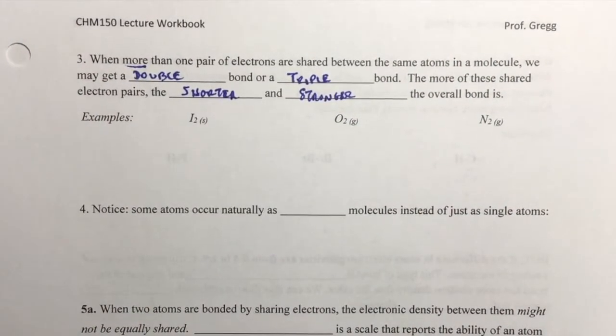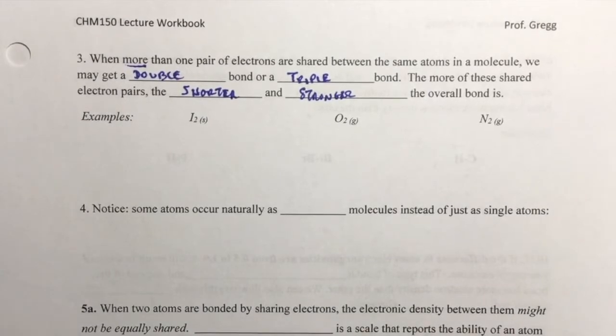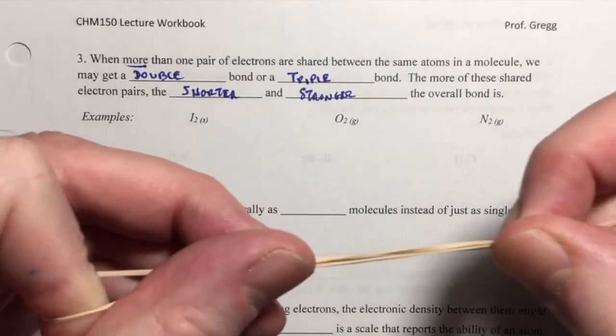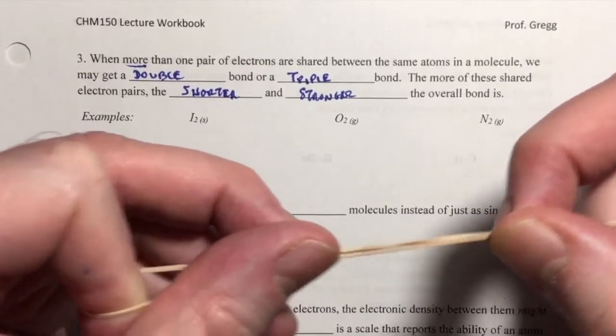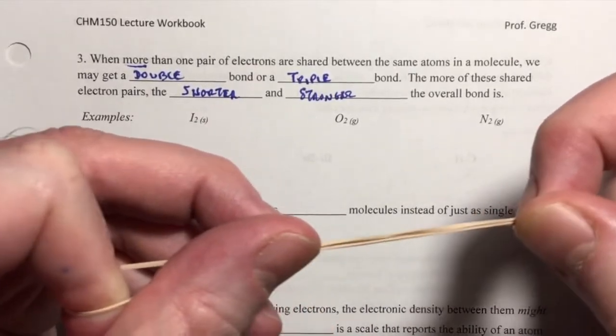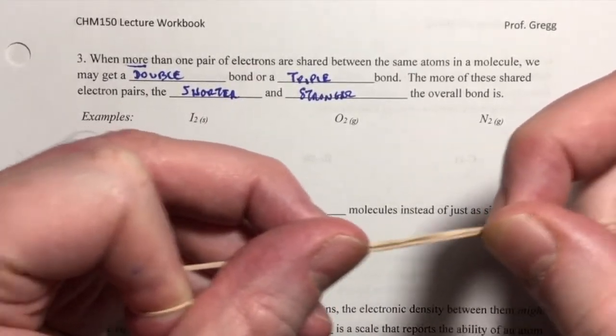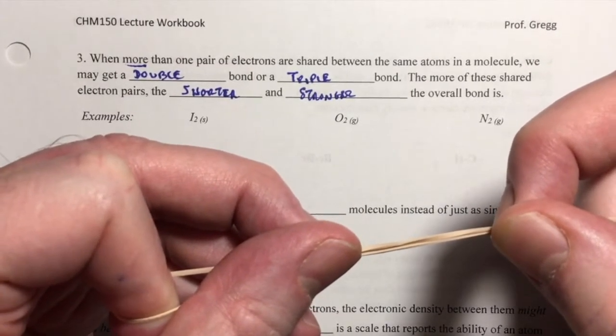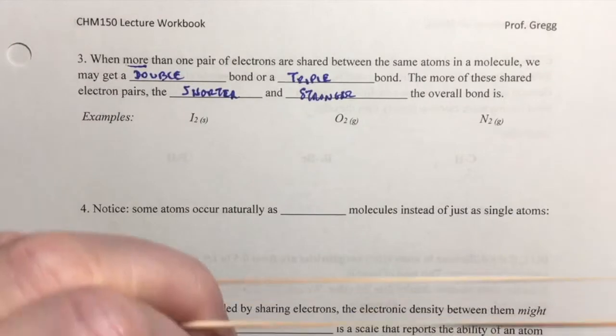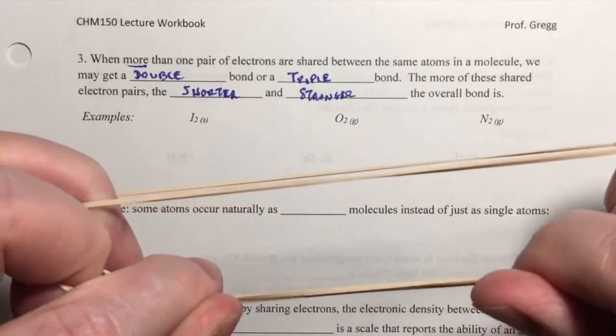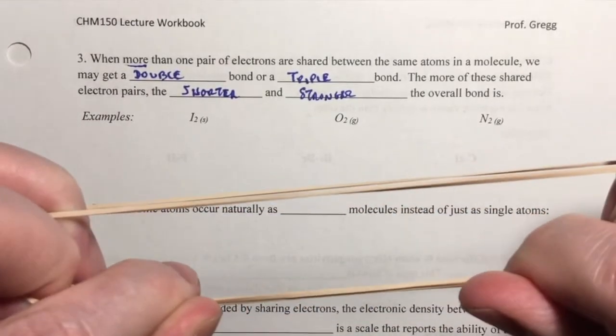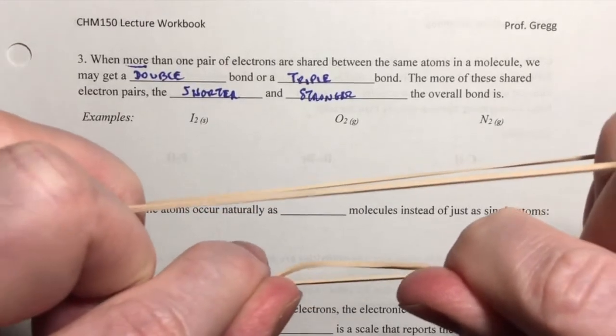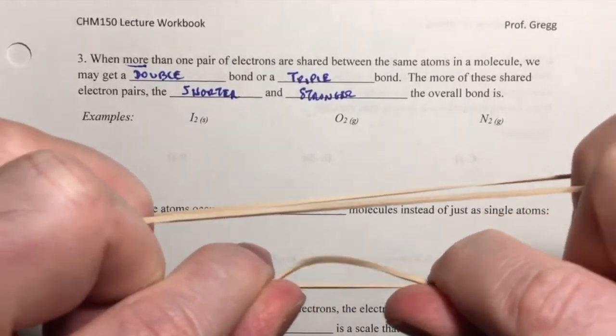You can imagine these bonds as being sort of like the attractive forces of a rubber band. If I have a single electron pair it's attracting my hands together with some force, but if I have another electron pair that I'm sharing, we can think of that as another rubber band. Obviously the attractive force is going to be greater, so the distance between my hands is going to be shorter.